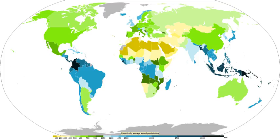The wet, or rainy, season is the time of year, covering one or more months, when most of the average annual rainfall in a region falls. Areas with wet seasons are dispersed across portions of the tropics and subtropics. Savannah climates and areas with monsoon regimes have wet summers and dry winters. Tropical rainforests technically do not have dry or wet seasons, since their rainfall is equally distributed through the year. Some areas with pronounced rainy seasons will see a break in rainfall mid-season when the intertropical convergence zone or monsoon trough moves poleward during the middle of the warm season. When the wet season occurs during the warm season or summer, rain falls mainly during the late afternoon and early evening hours. The wet season is a time when air quality improves, freshwater quality improves, and vegetation grows significantly.